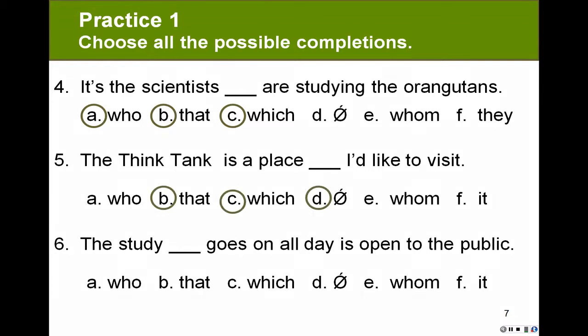Our choices are B, C, or D: that, which, or nothing. We are talking about a place, which is a thing. I'd like to visit. It's an object adjective clause.